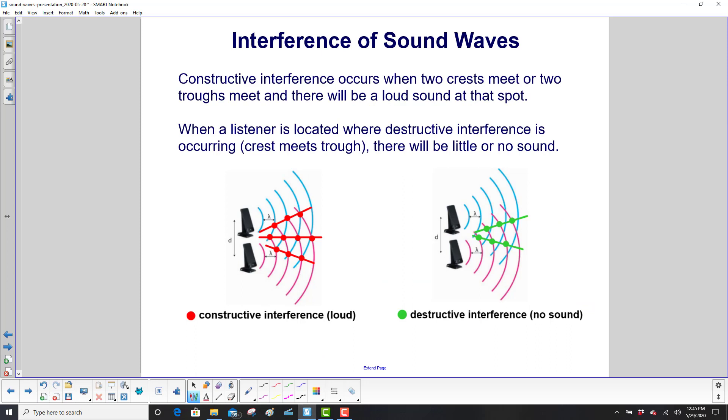Constructive interference occurs when two crests meet or two troughs meet, and there will be a loud sound at that spot. When a listener is located where there is destructive interference, the listener will hear little or no sound.